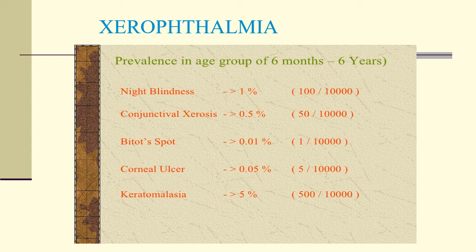The prevalence in the age group 6 months to 6 years: night blindness more than 1%, conjunctival xerosis more than 0.5%, Bitot spot more than 0.01%, corneal ulcer 0.05% (5 in 10,000), and keratomalacia more than 5% (500 in 10,000 children).